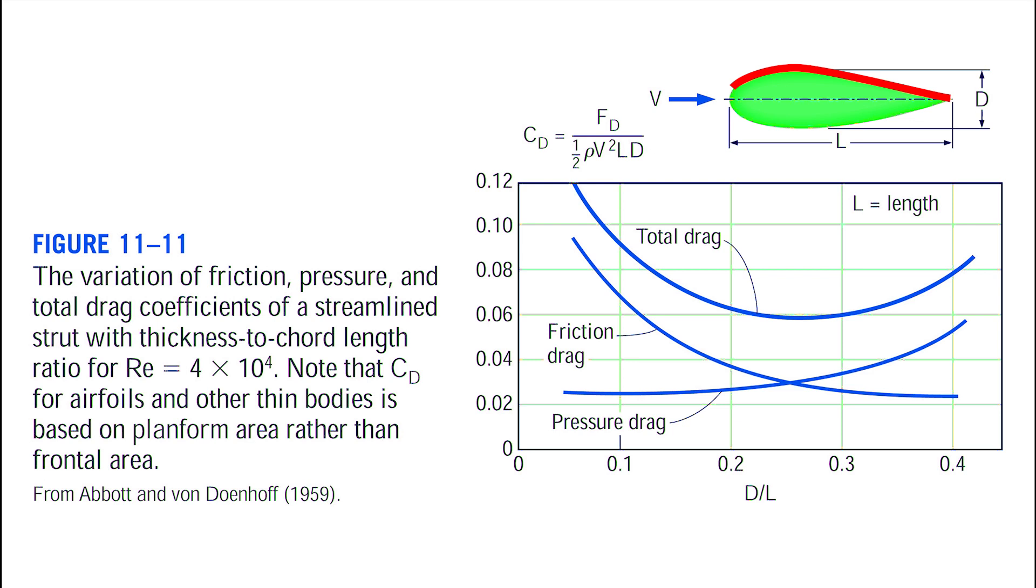And it increases the friction drag by increasing the surface area aligned with the direction of the flow. Also, friction drag increases with roughness.